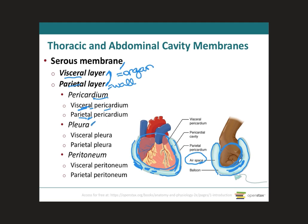The pleura is the membrane that lines the pleural cavity, which contains the lungs. The membrane in contact with the lungs is the visceral pleura, and the membrane in contact with the wall of the pleural cavity is the parietal pleura. In the abdominal cavity, the serous membrane is called the peritoneum — the visceral peritoneum is in close contact with the abdominal organs, and the parietal peritoneum is in contact with the wall of the abdominal cavity.